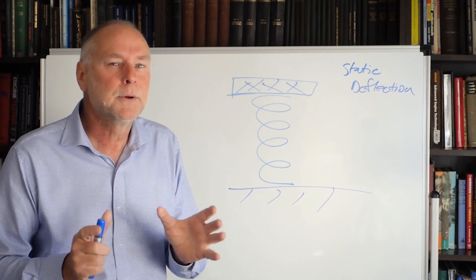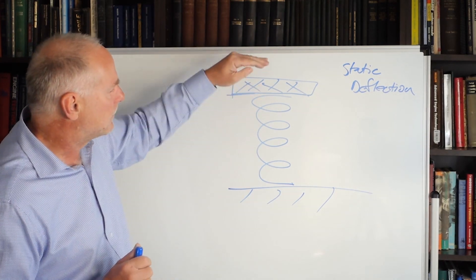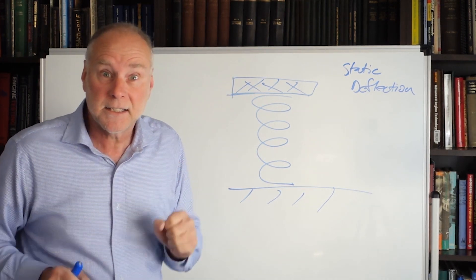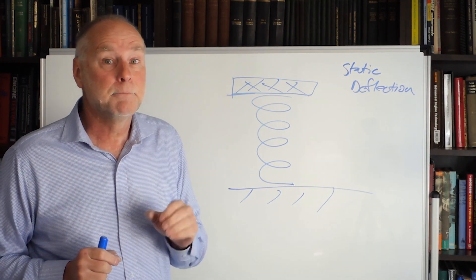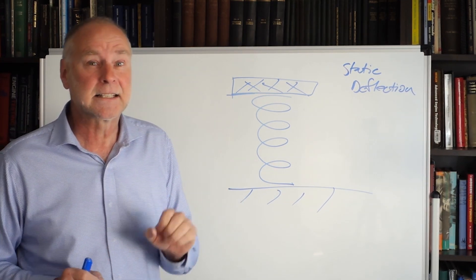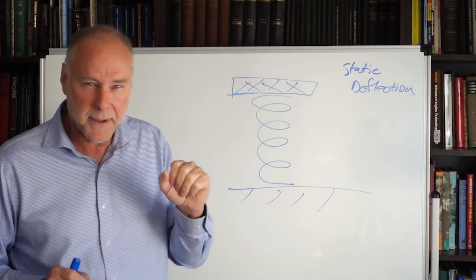Now let's do it again, but this time let's have a stopwatch in our hand. So we push down on the weight, we release it, and then we time how many bounces it does over the next minute. Let's say it does 60 bounces in that next minute. It's dying away, but don't worry about that, just count the bounces.